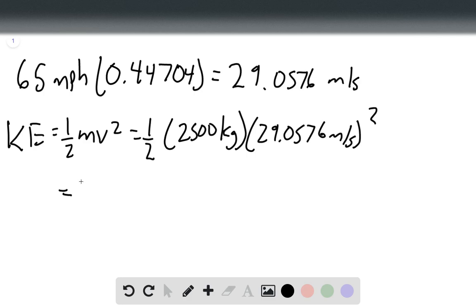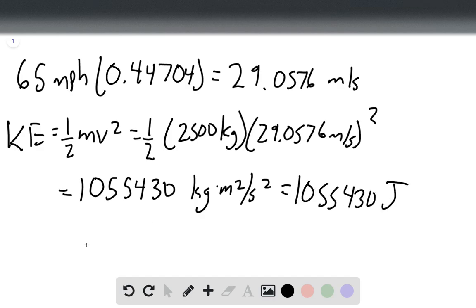gives us a kinetic energy of 1,055,430 kilogram meter squared over seconds squared, which is equal to 1,055,430 joules. And so we'll just divide that by a thousand to convert into kilojoules.